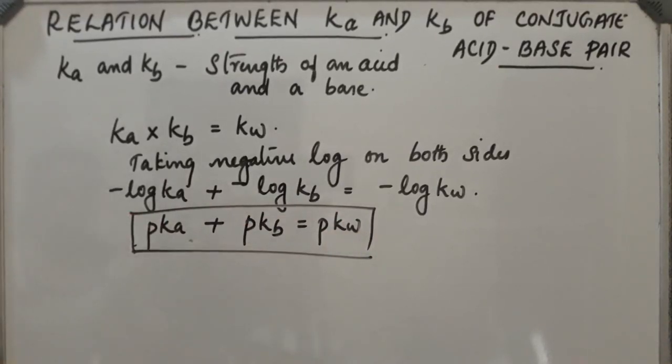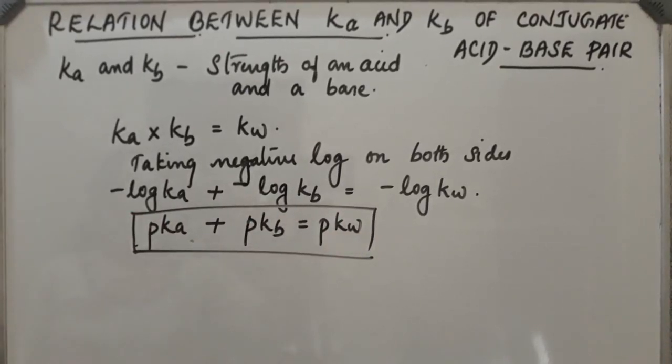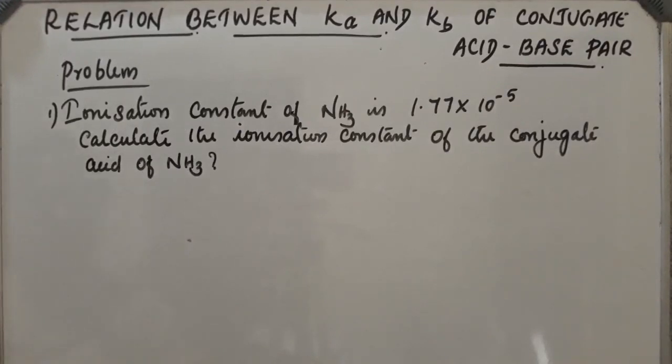Now let us do one problem based on this. The problem is: ionization constant of ammonia is 1.77 × 10^-5. Calculate the ionization constant of the conjugate acid of ammonia.